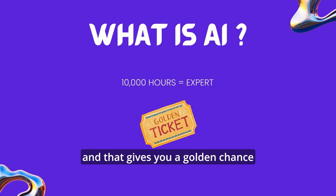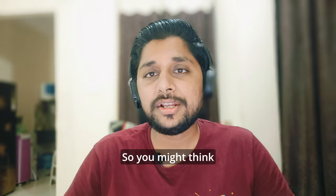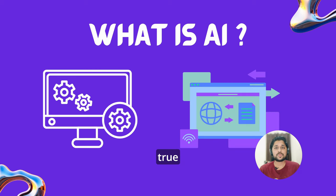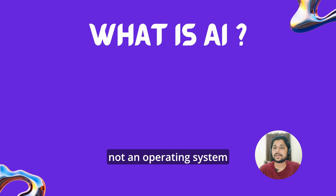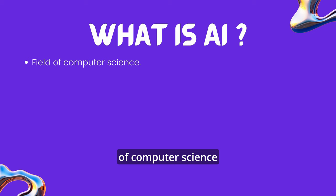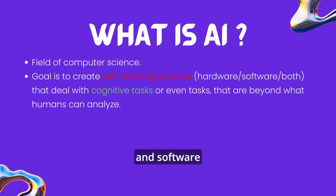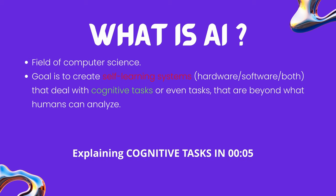And that gives you a golden chance to excel in AI and stay ahead of everyone. You might think AI is some super computer or some software like that, which in a way is true. But just like Linux is technically not an operating system, AI is technically a field of computer science that deals with a set of technologies concerned with building hardware and software, or a combination of both, that can solve cognitive problems or tasks that involve data whose scale exceeds what humans can analyze.